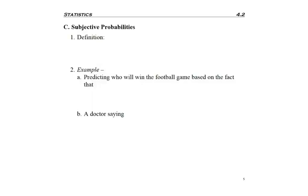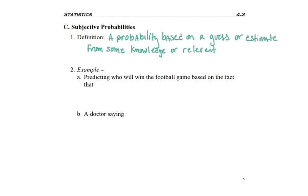The third method for finding probability is subjective. The definition of subjective probability is a probability based on a guess or estimate from some knowledge or relevant circumstances. For example, if you're predicting who will win a football game based on the fact that the star player is out for one team...